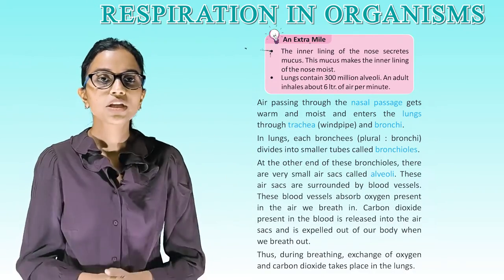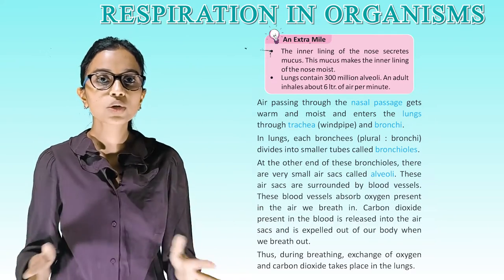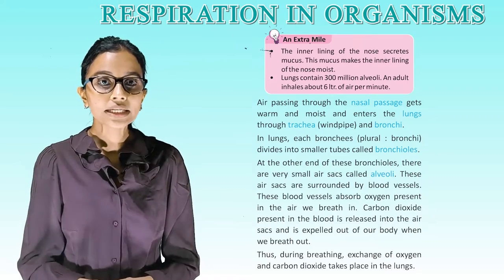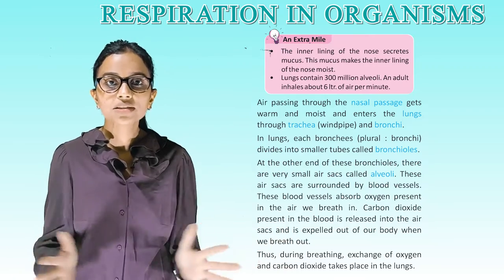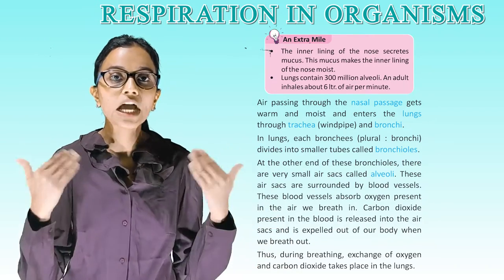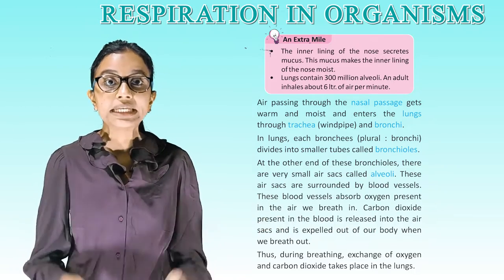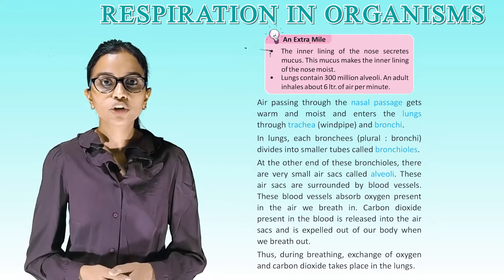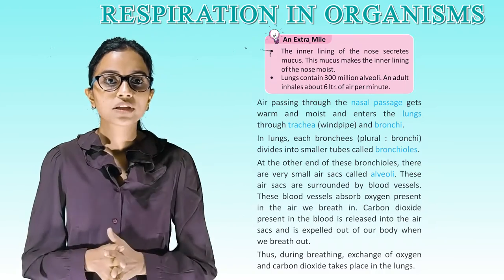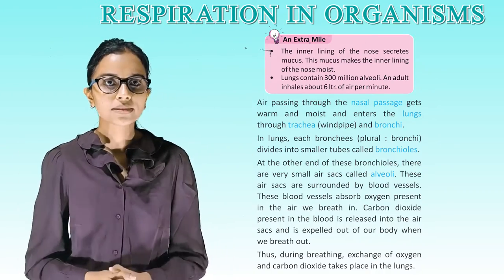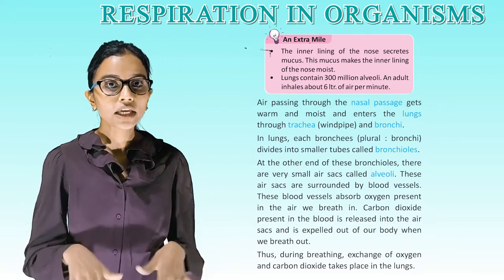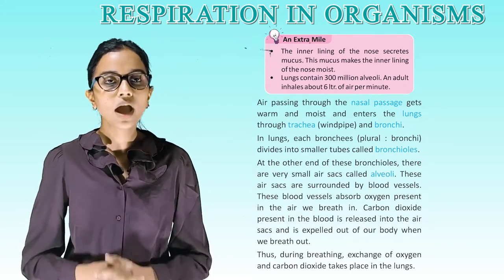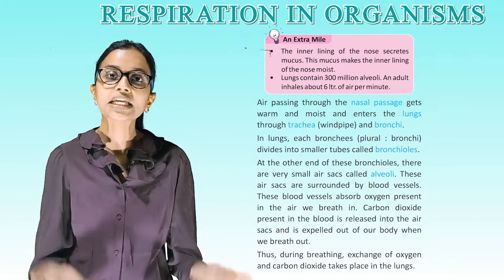The inner lining of the nose secretes mucus, which makes the inner lining moist. Lungs contain 300 million alveoli, and an adult inhales about 6 liters of air per minute. Air passing through the nasal passage gets warm and moist and enters the lungs through the trachea, windpipe, and bronchi. In the lungs, each bronchus divides into smaller tubes called bronchioles. At the other end of these bronchioles, there are very small air sacs called alveoli. These air sacs are surrounded by blood vessels. The blood vessels absorb oxygen from the air we breathe in. Carbon dioxide present in the blood is released into the air sacs and expelled out when we breathe out. During breathing, exchange of oxygen and carbon dioxide takes place in the lungs.